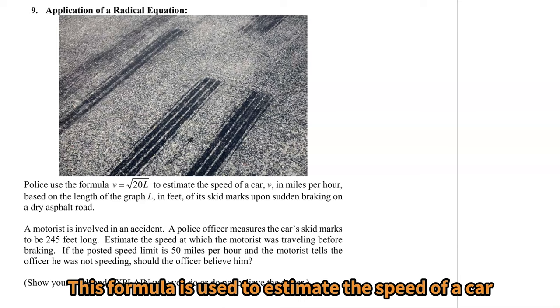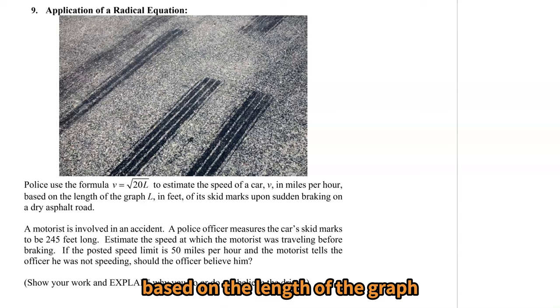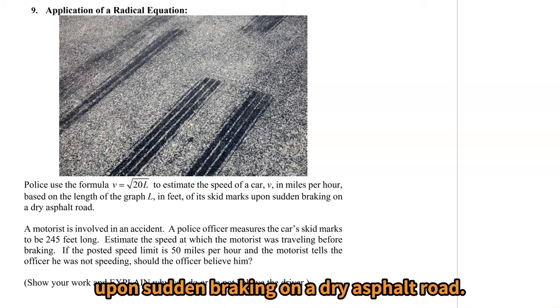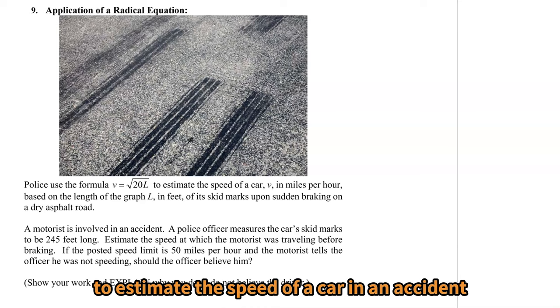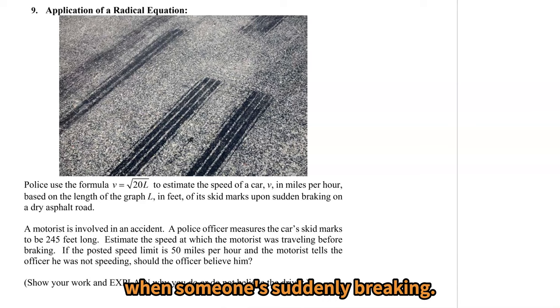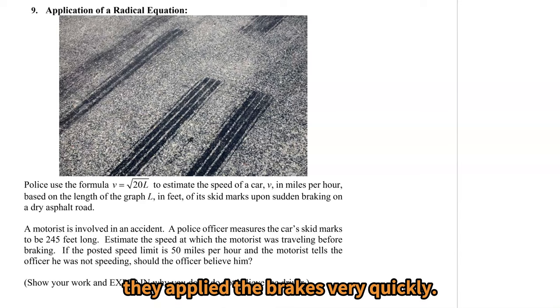Based on the length of the graph L in feet of its skid marks upon sudden braking on a dry asphalt road, police can use this formula to estimate the speed of a car in an accident when someone's suddenly braking so they can see at what speed they were going once they applied the brakes very quickly.